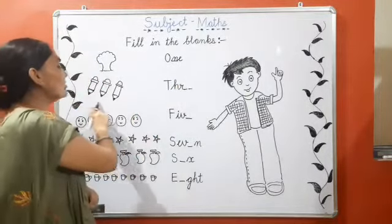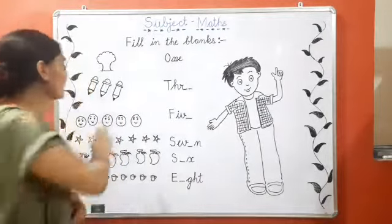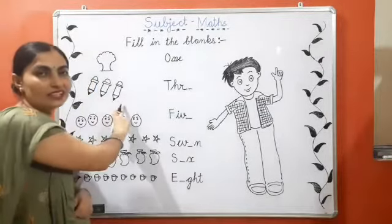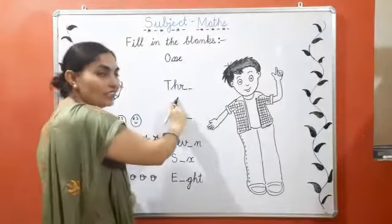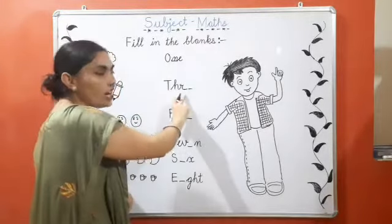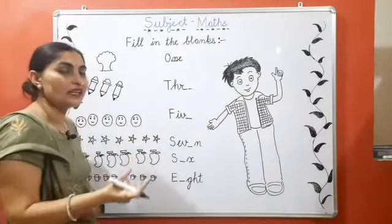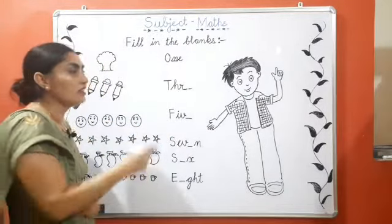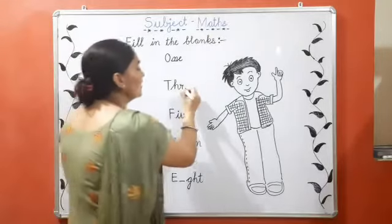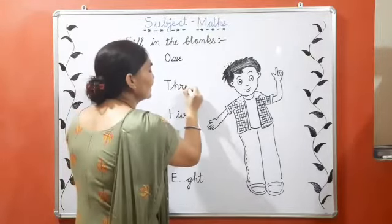Next, now count the pencils. One, two, three. Spelling of three. T, H, R I have written, hai na? Ma'am ne T, H, R likha hua hai. Three ki spelling me kya left hai? T, H, R, double E. Three.